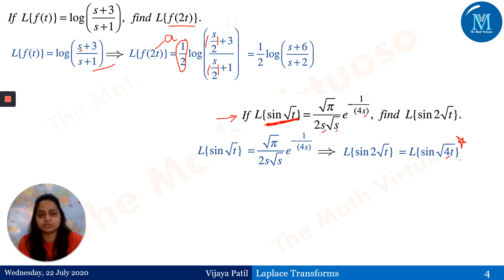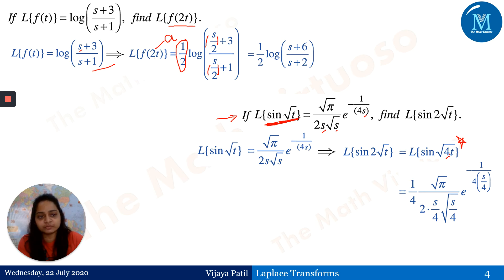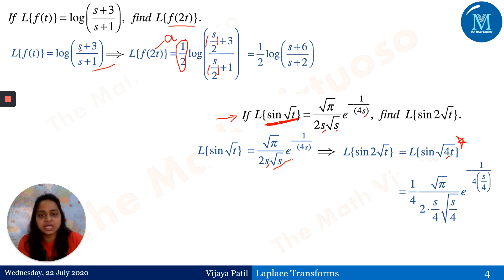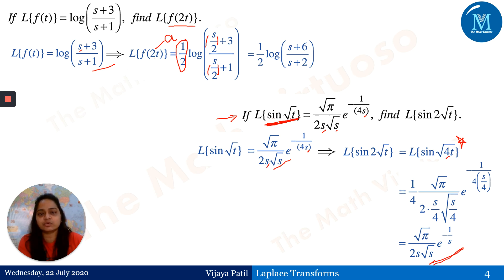Now applying the change of scale property: here a = 4, so every s is replaced as s/4. The result is (1/4) times √π divided by [2·(s/4)·√(s/4)] times e^(−1/(4·(s/4))). After simplification — replacing s with s/4 in every occurrence, including inside the square root and in the exponent — we get the final answer for the Laplace transform of sin(2√t).